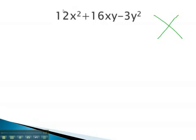Using the AC method, we want to multiply to 12 times negative 3, which is negative 36. We also want to add to 16.